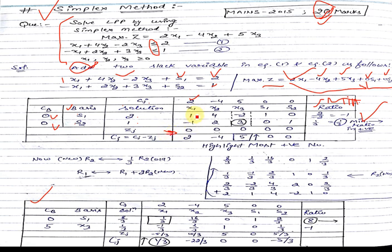Now calculate cj-bar (capital Cj), which equals small cj minus zj. So: 2-0=2, -4-0=-4, 5-0=5, 0-0=0, 0-0=0. We check for the maximum positive value in cj-bar; that is 5, so x3's column becomes the key column.